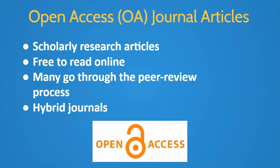Open access journal articles are scholarly research articles available online for free without any subscription or paywall barriers. Many reputable open access journals use a similar peer review process as traditional subscription-based journals. Some of these articles are published in hybrid journals — subscription journals in which some of the articles are open access.